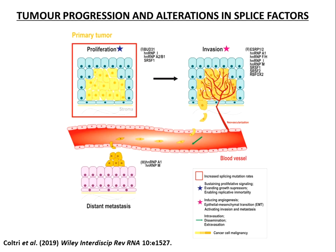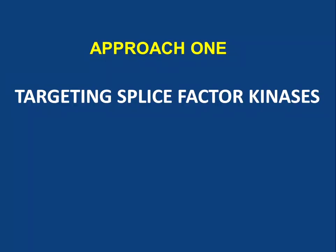So hopefully that gives you a little background on alternative splicing and how it is relevant to cancer. I want to talk about two approaches I have taken over the years in terms of looking at ways to manipulate the splicing machinery to achieve anti-cancer outcomes. The first is to target the so-called splice factor kinases — kinases, or protein kinases, are enzymes that add phosphate groups to splice factors.